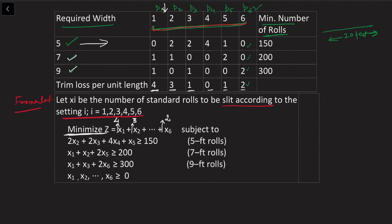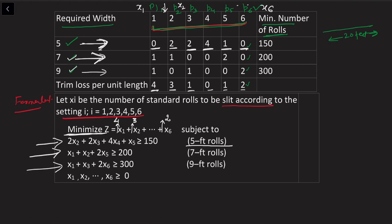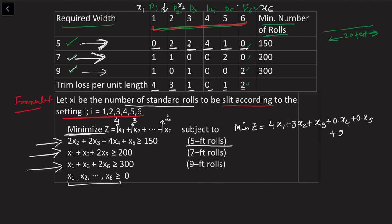Looking at the table row by row, x1 is the number of standard rolls cut on pattern 1, x2 on pattern 2, and so on up to x6. The constraint for 5-foot rolls is: 0·x1 + 2·x2 + 2·x3 + 4·x4 + x5 gives the first constraint. Similarly, reading the 7-foot data gives the second constraint, and the 9-foot data gives the third. Decision variables are all greater than or equal to zero. The objective function to minimize total wastage is: minimize Z = 4x1 + 3x2 + x3 + 0·x4 + 0·x5 + 2x6.